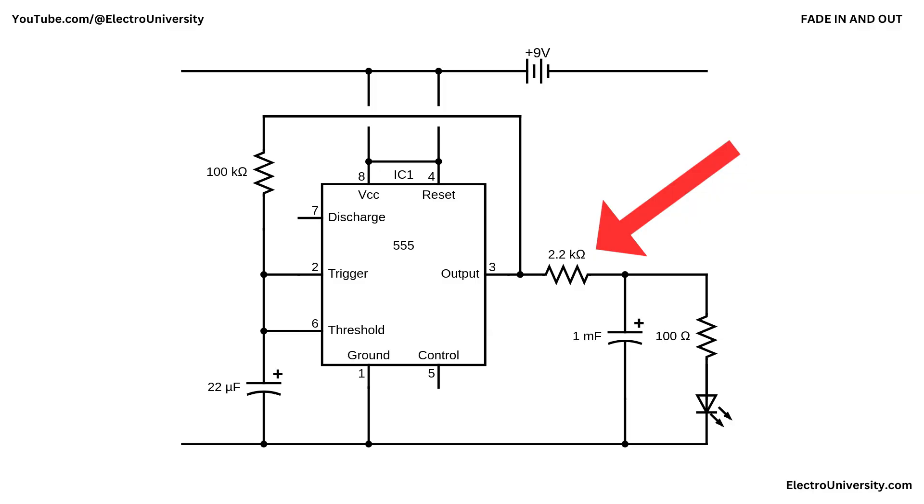When the output at pin 3 goes high, it charges a 1,000-microfarad capacitor through a 2,200-ohm resistor. This capacitor is connected in parallel with the LED and a 100-ohm current-limiting resistor. As the capacitor charges, the voltage across the LED gradually increases, causing the LED to fade in.